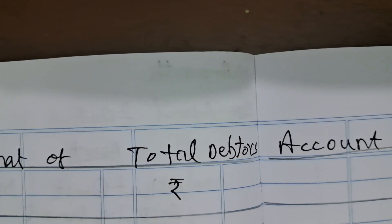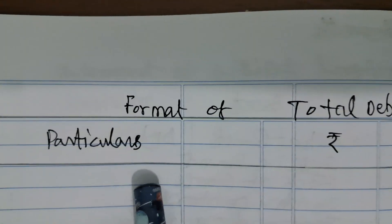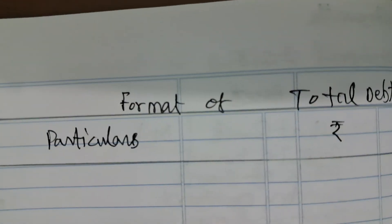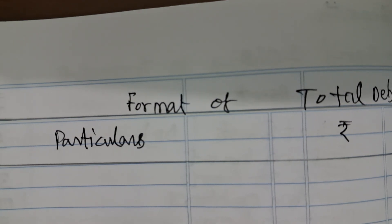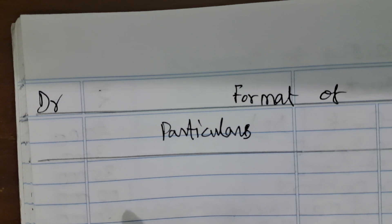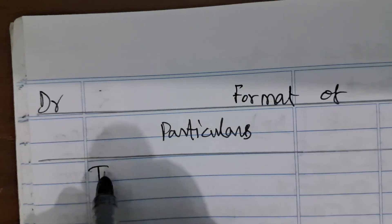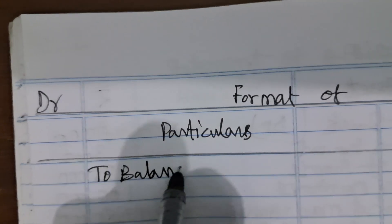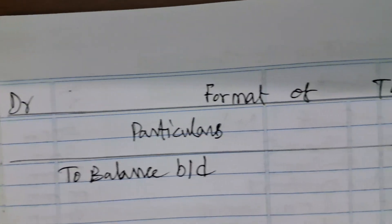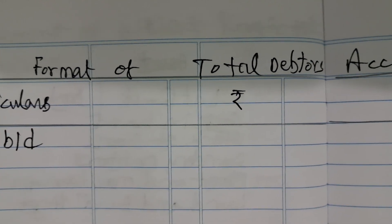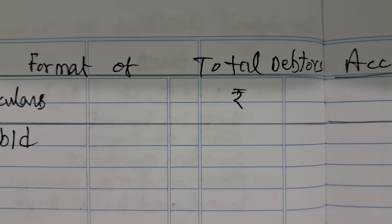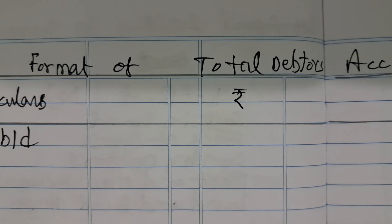The Total Debtors Account has a debit side and a credit side with particulars and rupees columns. The Total Debtors Account always shows a debit balance. So the first item on the debit side is 'To Balance b/d' — this is the opening balance of debtors. The closing balance of debtors should be on the credit side.